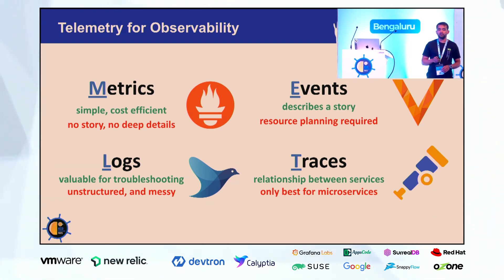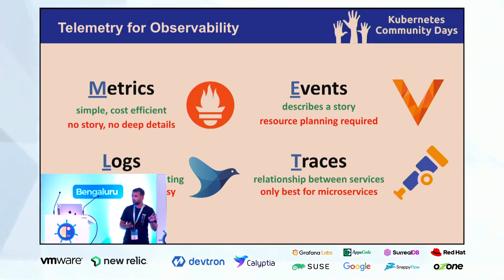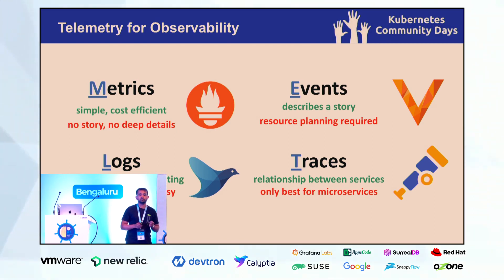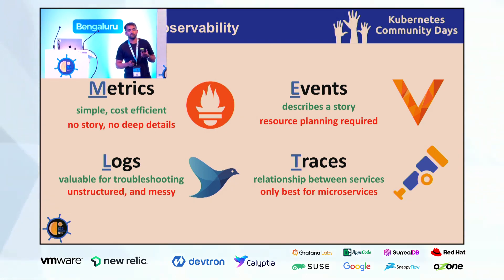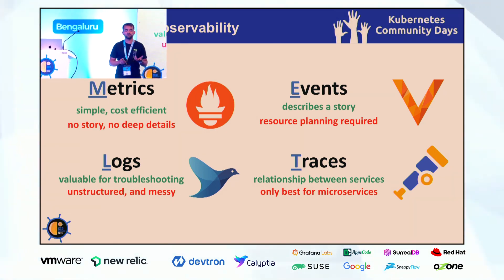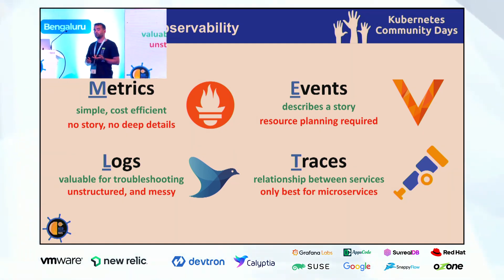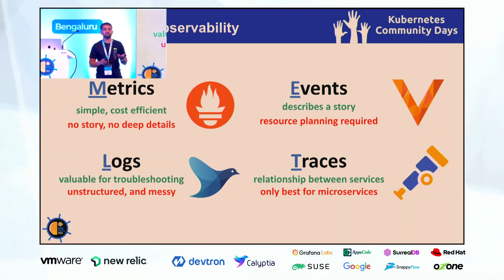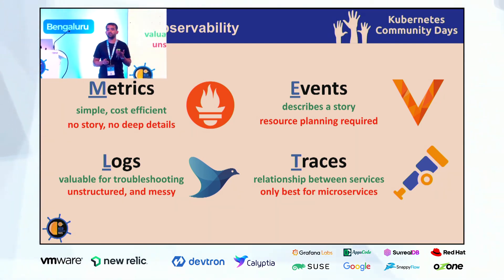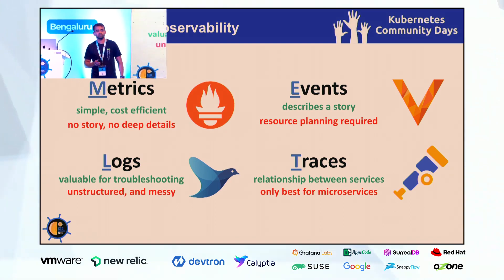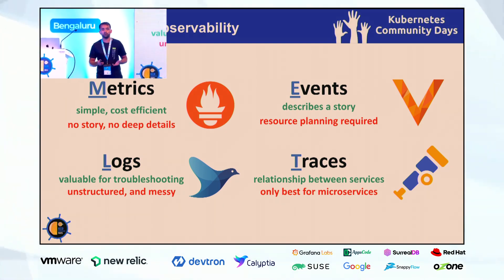What does observability consist of? It has four key components: metrics, events, logs, and traces. What is metrics? It is a numerical measurement of a specific thing — it can be CPU percentage utilization or memory utilization percentage. It is simple and cost efficient, but it does not tell us any stories and does not provide any deep details. We can only see a spike or the number changing, and if we have to drill down into it, we cannot.